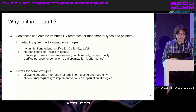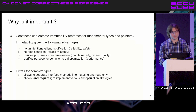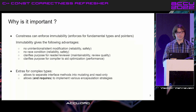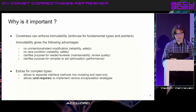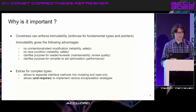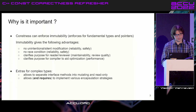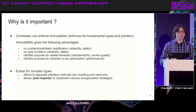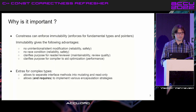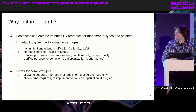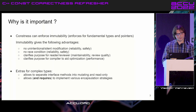Why is it important? Constness can enforce immutability, which brings a lot of advantages. If the object is immutable, it cannot be accidentally modified — providing reliability and safety. No race condition can happen while accessing it, because there is no writer. It also clarifies the purpose of objects for the reviewer, reader, and compiler, which aids compiler optimization significantly.